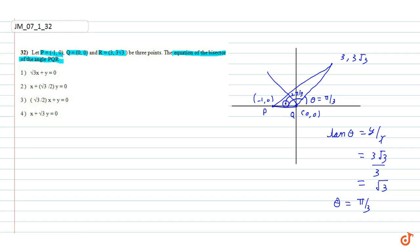The bisector bisects the angle. The angle on the other side is 2π/3. So the slope of the bisector line is tan(2π/3).